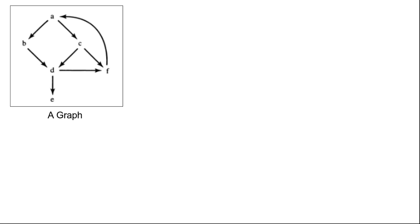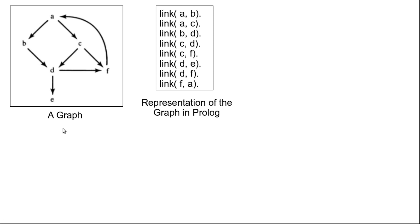First we'll consider a directed graph as our example. As you can see, we have a link from a to b but not from b back to a, then a link from b to d, and so on. We can represent this graph in Prolog using 8 facts, using the predicate 'link' which indicates whether an edge exists between two nodes. So we have link(a,b), link(a,c), and so on — using these 8 facts to represent the directed graph.